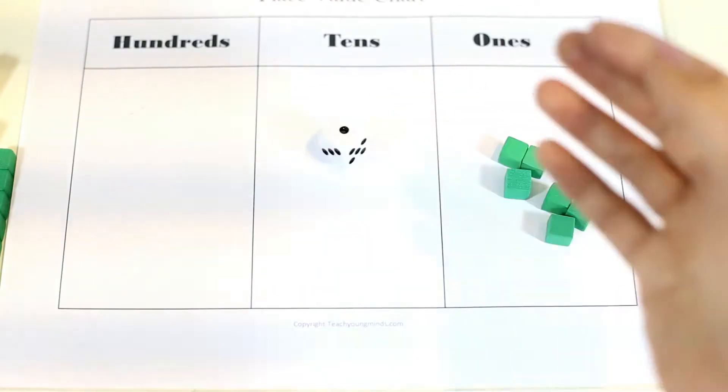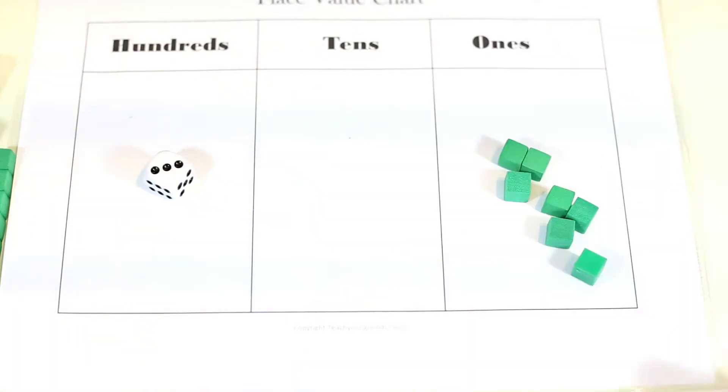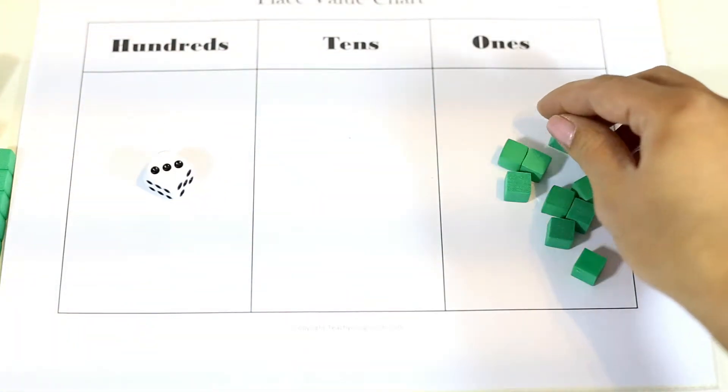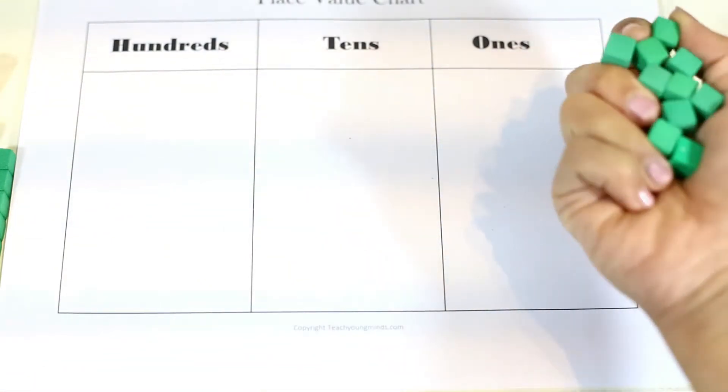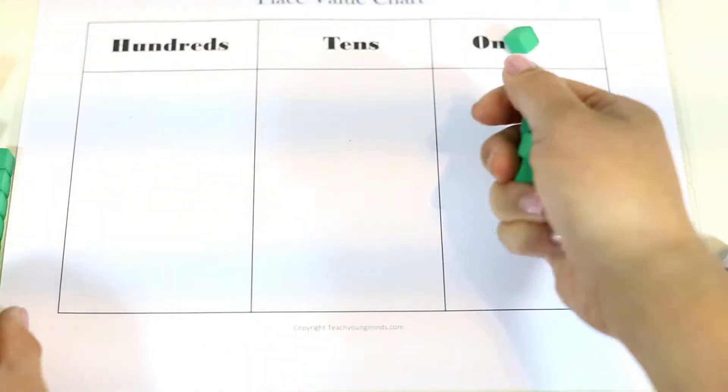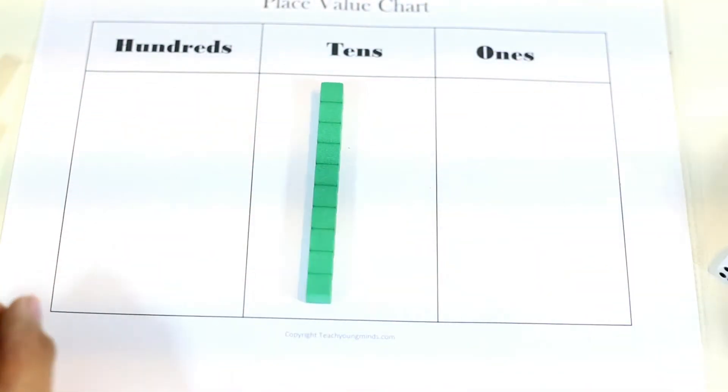They'll keep rolling. So now they have six. Now they have seven. And now they have 10. When the 10 happens, they are going to regroup. So this is also teaching them about regrouping. And the 10 ones become 1 ten.